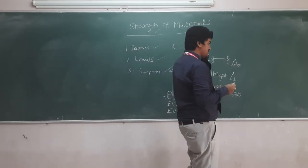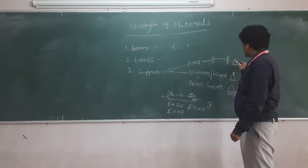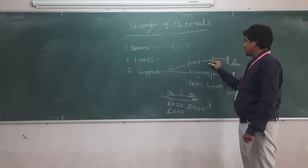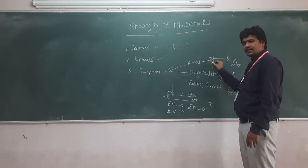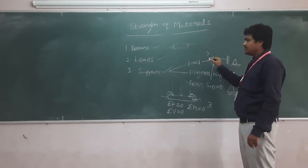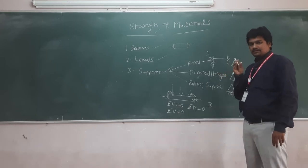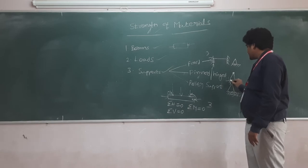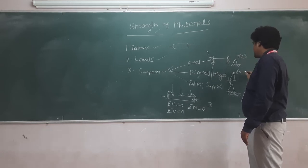In case of supports, one more thing we need to know is the reactions — how many reactions are there for each support. For a fixed support, there will be a horizontal reaction, a vertical reaction, and a moment reaction, so the number of reactions is three. For a pin/hinged support, moment does not take place, so only horizontal and vertical reactions occur — the number of reactions is two. For a roller support, only a vertical reaction acts, so the number of reactions is one.